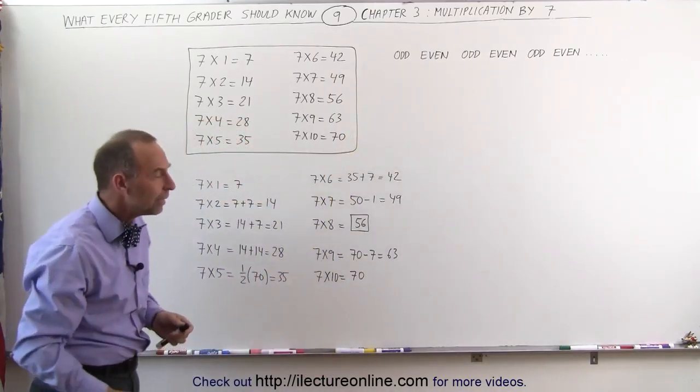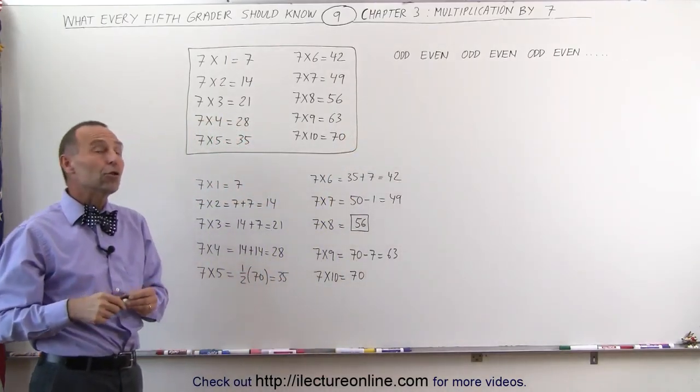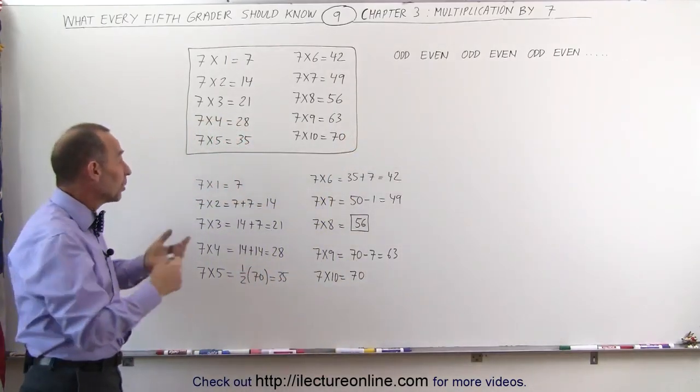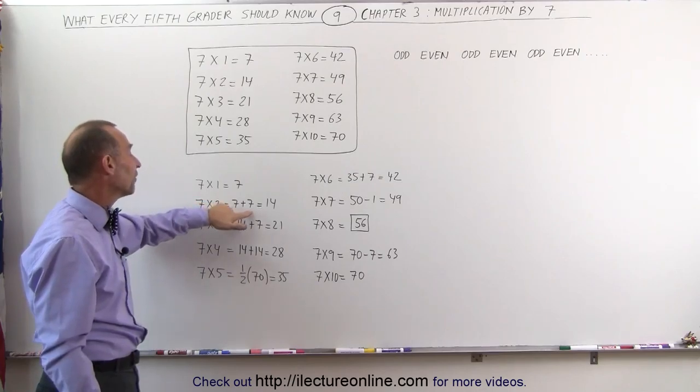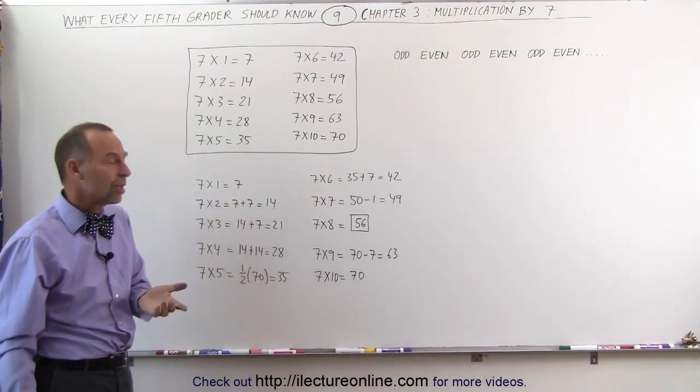So that does help us a little bit. Some other tricks we can use to multiply by 7: 7 times 1, that's easy enough, that's simply 7. And 7 times 2 simply means we have two 7s, and therefore that's 14.